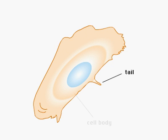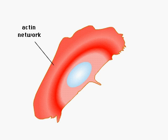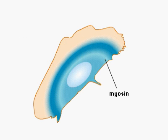The nucleus and major organelles are located in the cell body. A network of actin filaments fills the entire cell, while contractile myosin molecules are located in the cell body.